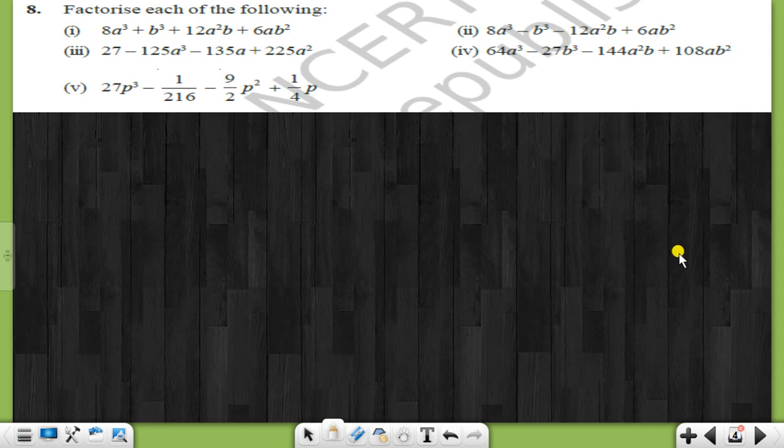Hello everyone, today we will solve question number eight. Factorize each of the following: question is 64a³ minus 27b³ minus 144a²b plus 108ab².